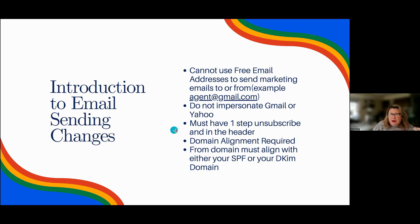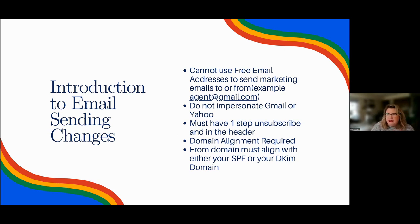You also need to have a one-step unsubscribe in your emails. Gmail wants it in the header, right where you see the to and from. A lot of applications are fixing how they set up their unsubscribes and moving to that. You also need to have domain alignment — in other words, you can't be sending from a domain like berkeleyrealestate.com when your sender address is katie at hillsiderealty.com. The domain names need to match in order to get delivered.